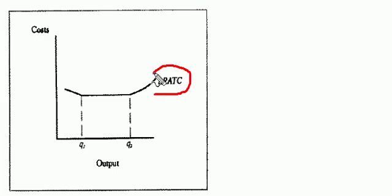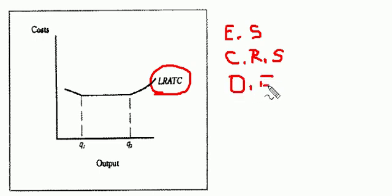Along this long-run average total cost schedule, we're going to identify where economies of scale are, where constant returns to scale are, and where diseconomies of scale are.